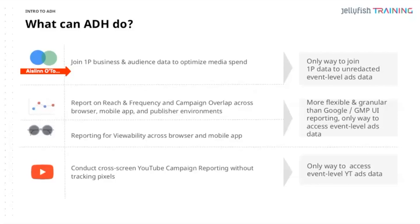It allows us to do that in a privacy-safe way at a user level, outputting in aggregate. It also enables us to do reach and frequency reporting on a greater timescale. In the Campaign Manager interface we are limited to 93 days, whereas with Ads Data Hub we can look back over 13 months — particularly important for any industries or advertisers with a longer buying cycle.